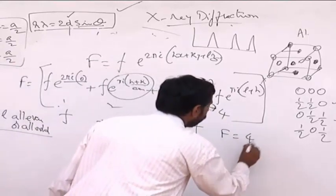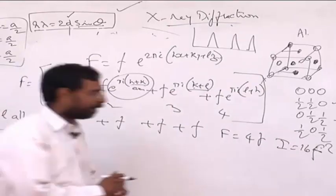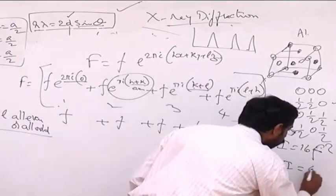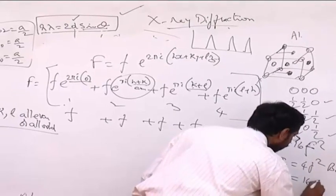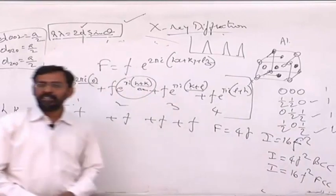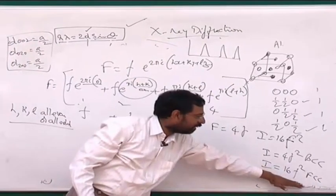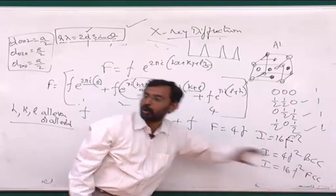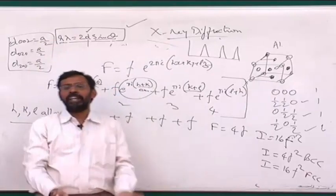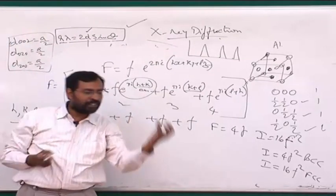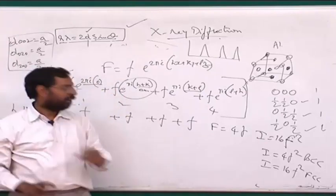We see an interesting comparison: for BCC, I = 4f², while for FCC, I = 16f². This means FCC metals give higher intensity peaks than BCC metals because they have more atoms per unit cell, resulting in more scattering. If you have a mixture of a BCC and an FCC metal and send an X-ray beam through it, the BCC peaks will be smaller and FCC peaks will be larger.